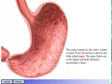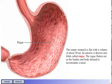The empty stomach is flat, with a volume of about 50 milliliters. Its interior is thrown into folds called rugae. The rugae flatten out as the fundus and body distend to accommodate a meal. The stomach can hold about one liter of food with little change in internal pressure, and up to four liters as it distends further.